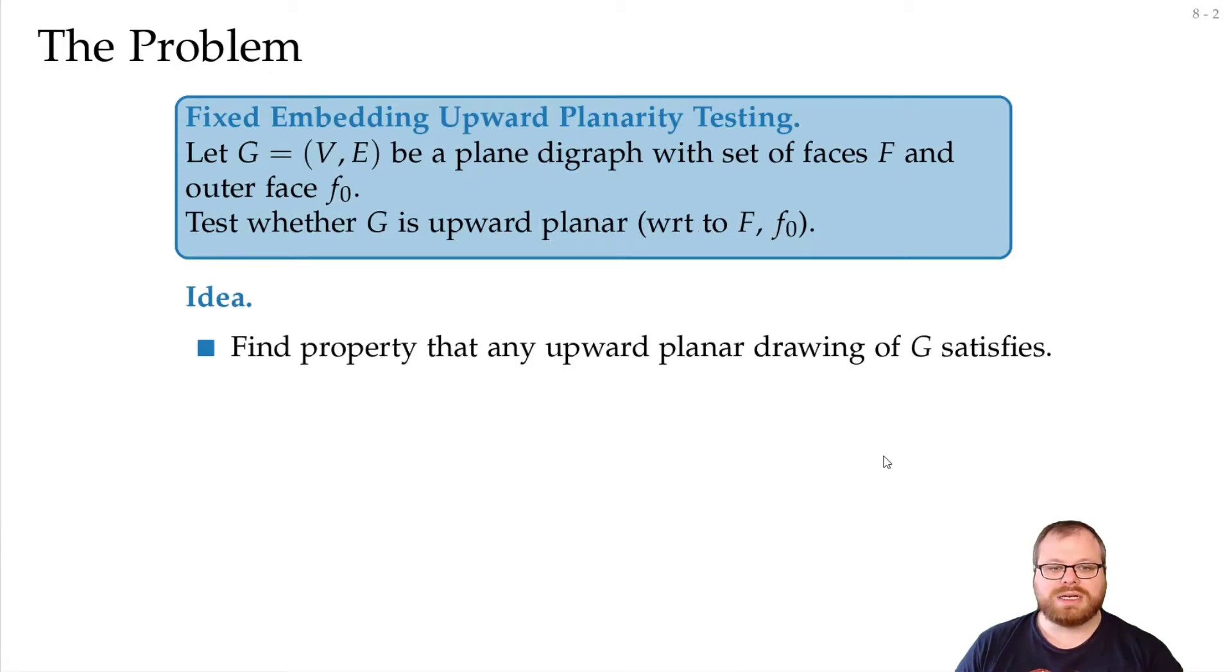And the idea for that algorithm is a very simple one. We first want to find a property that any upward planar drawing of the graph satisfies, then we want to formalize the property, and then we want to find an algorithm to test the property.